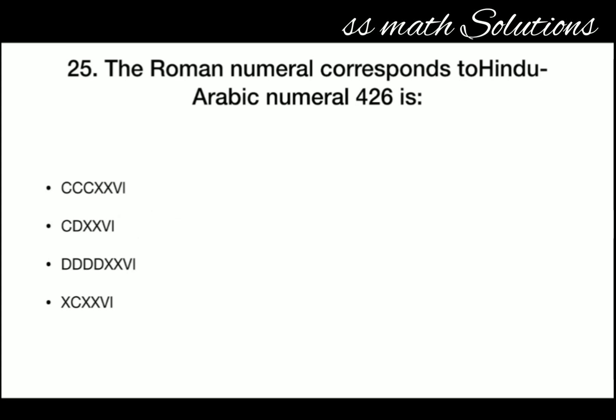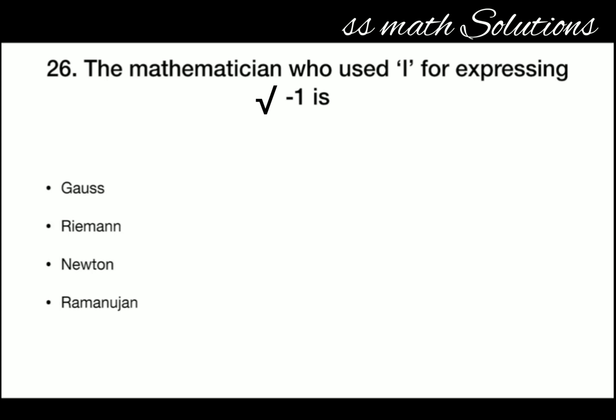The mathematician who used 'i' for expressing the square root of minus one is — Gauss. The mathematician who used i for expressing root minus one is Gauss.